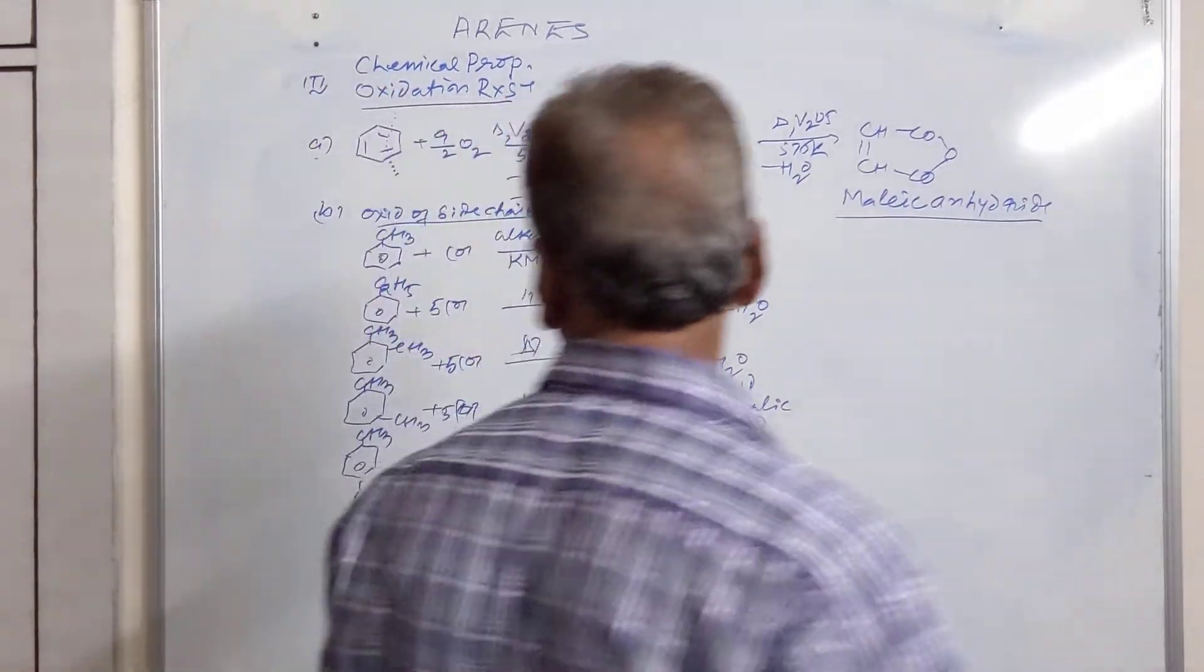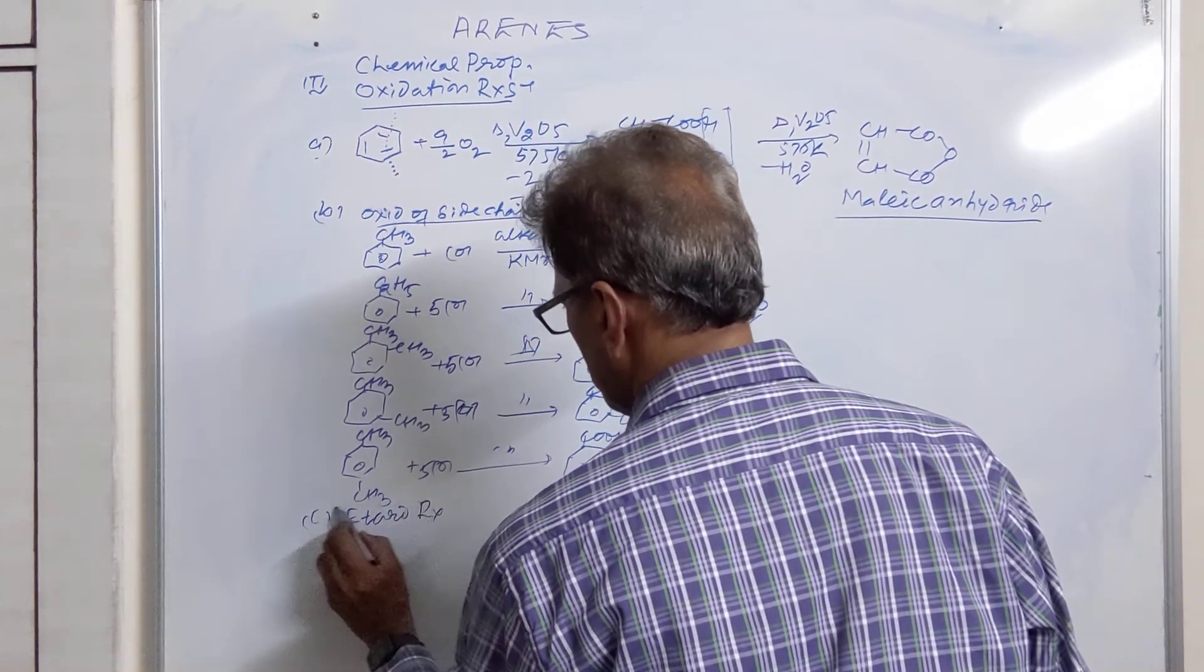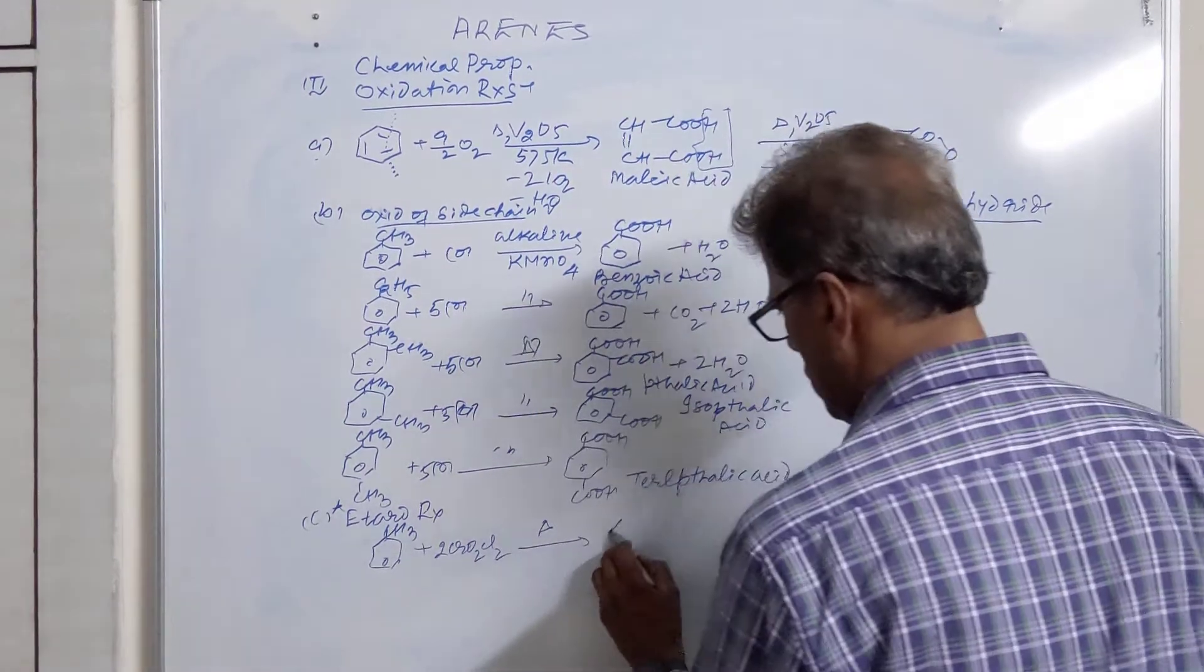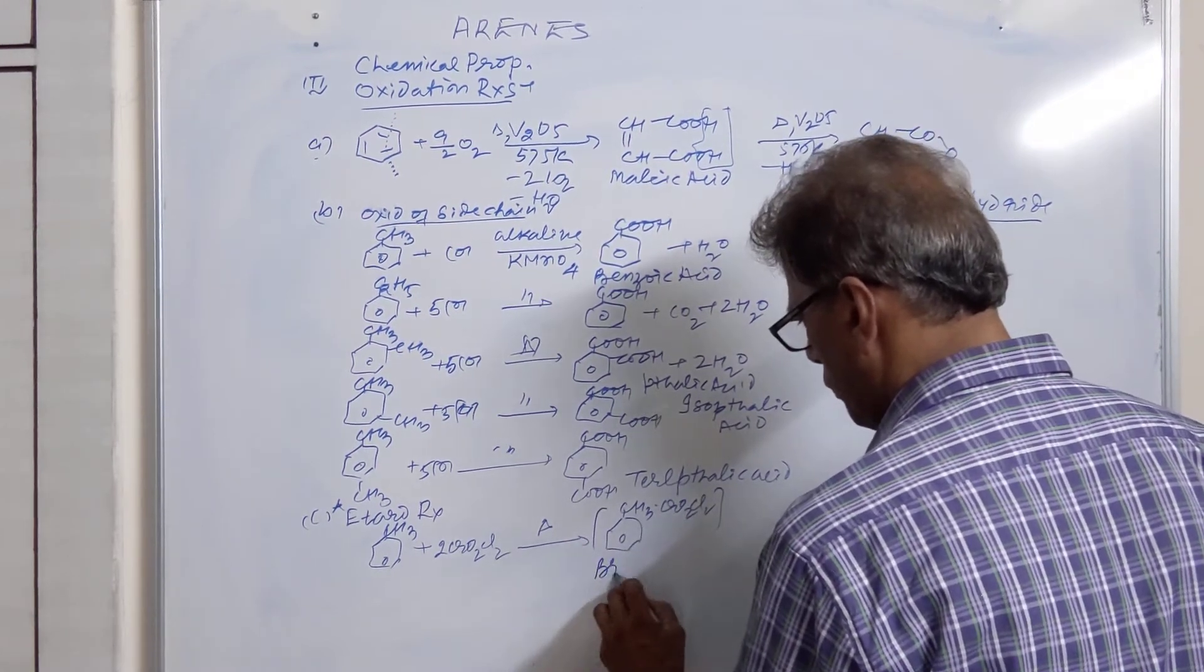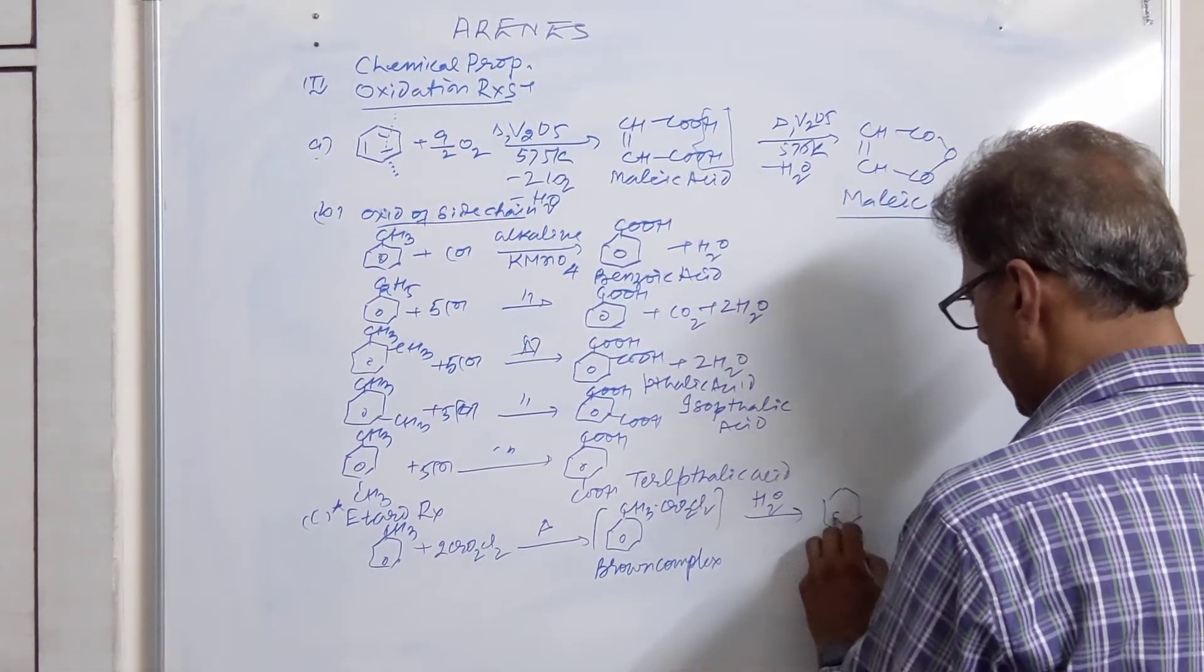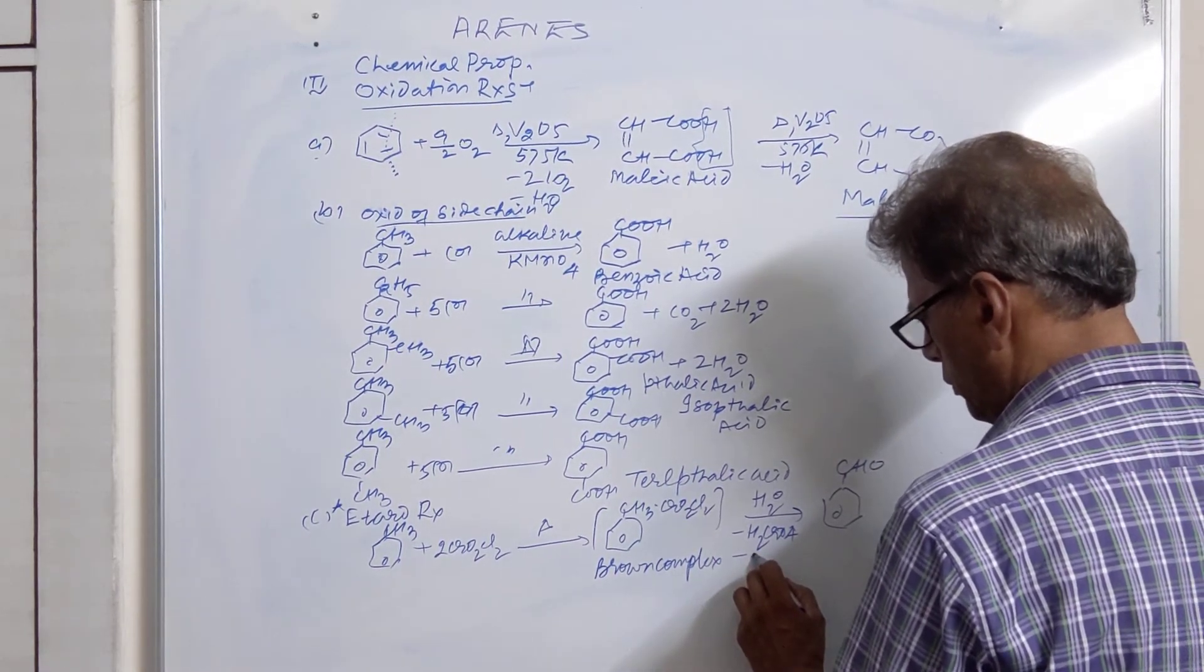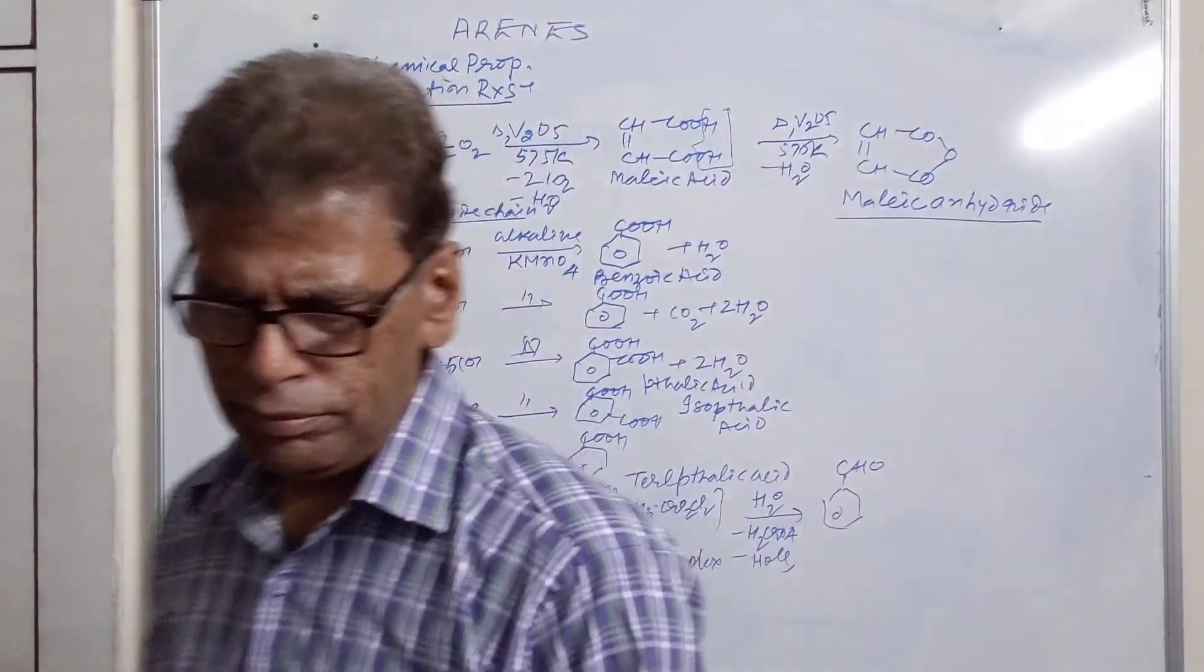Then we have another oxidation reaction, that is Etard reaction. This is a named reaction. Here toluene is treated with chromyl chloride. It is treated at high temperature. We get a brown color complex. This complex is hydrolyzed. It will break to give you CHO plus H₂CrO₄ plus 2HCl. So this is benzaldehyde, product of toluene.